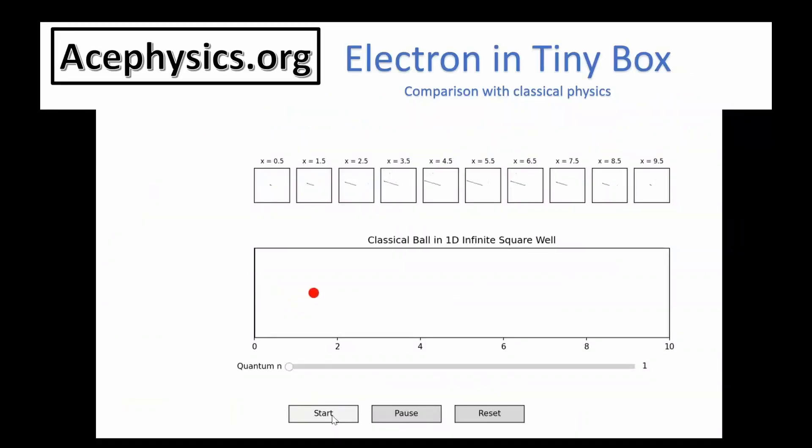In this applet, the bottom shows a classical ball bouncing in a box, while the top shows a tiny particle confined to a box, like an electron in an atom or a quark in a proton. The comparison helps visualize how differently quantum particles behave. We can't see electrons directly, but experiments confirm they don't move like tiny balls.